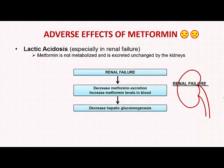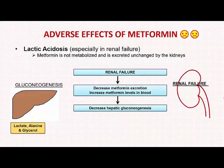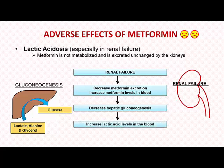The primary action of metformin is to block hepatic gluconeogenesis. The main substrates for gluconeogenesis are lactate, alanine, and glycerol, which are converted to glucose in the liver. Once metformin levels start rising in the blood due to renal failure, it impairs hepatic utilization of lactic acid, leading to increased lactic acid levels in the blood and increasing the risk of lactic acidosis.